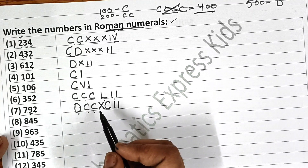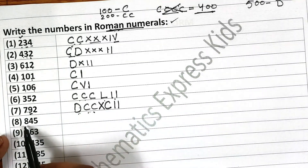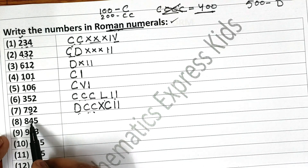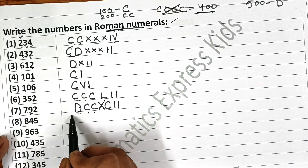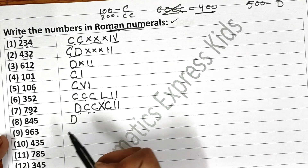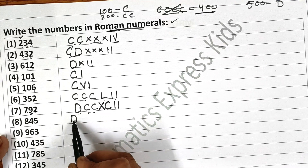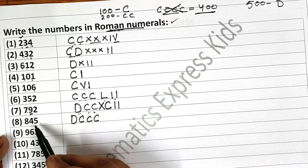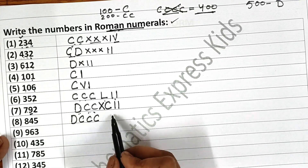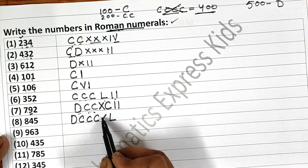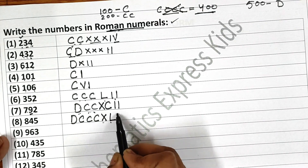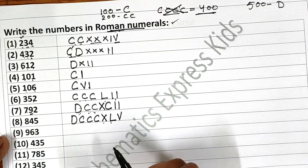The next one is 845. For 800: first write 500, then add 300 to it — 500, 600, 700, 800. Then for 45: first write 50, subtract 10 from it, that is 40, and then add 5.